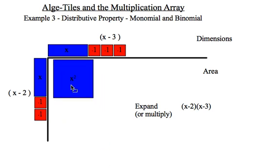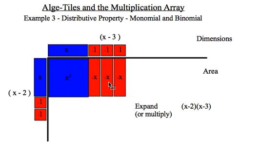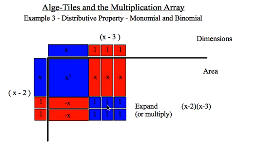Again, x times x, x squared, x times negative 1 would be negative x. Repeat that three times. Negative 1 times x, negative x. Repeat that twice. And now negative 1 times negative 1 is positive 1. So that leaves me with some positive 6s.